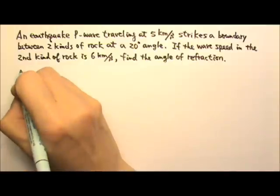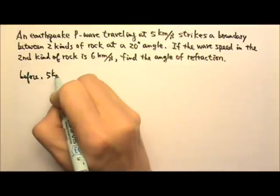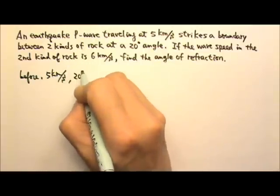So, before the refraction, the wave travels at 5 kilometers per second and it strikes the boundary at a 20 degree angle.